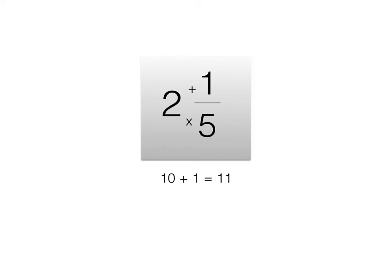Finally, we need to place our total from addition on top of our original denominator. Our total was 11 and our original denominator was 5. This gives us a final answer of 11 over 5, or an improper fraction.